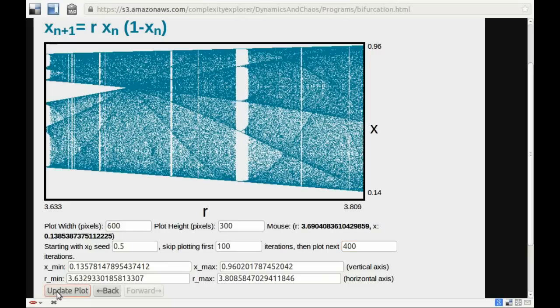So there one can see perhaps a little better some of this additional structure that's in here. We'll explore that a little bit in some of the later units. But the main point for now is to note that there is a tremendous amount of structure in the bifurcation diagram.